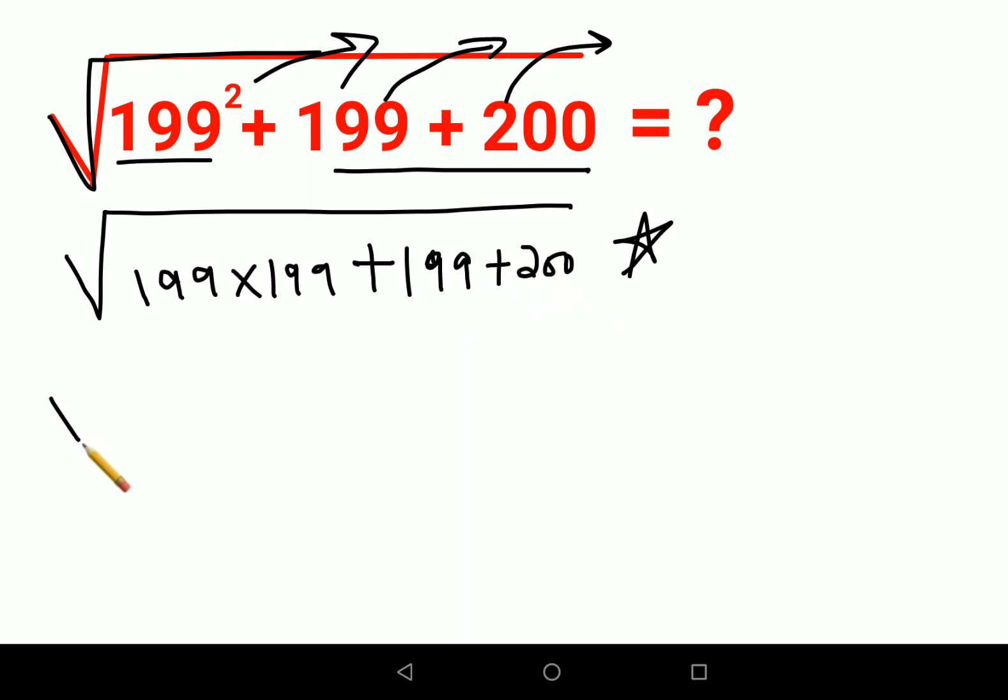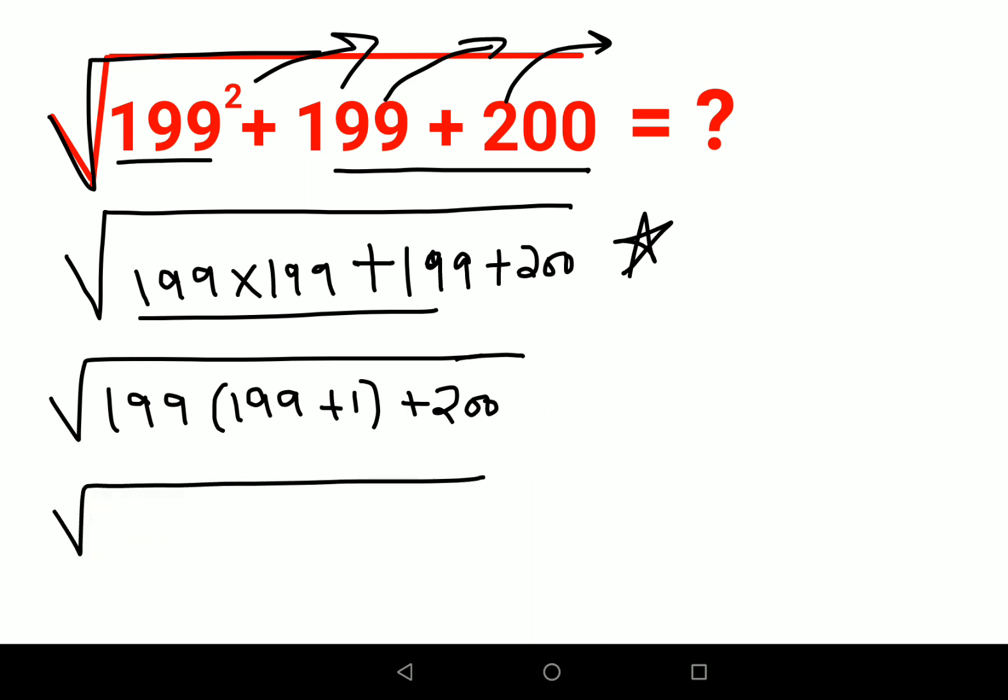Then what happens is we'll take 199 common between these two. So you will be left with 199 times (199 plus 1) plus 200. This bracket comes out to be 200 plus 200.